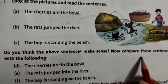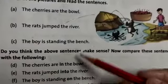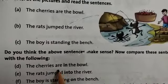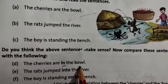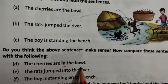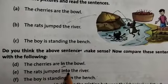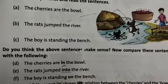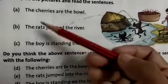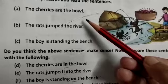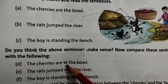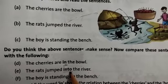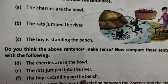Now compare these sentences with the following: The cherries are in the bowl. The rats jump into the river. The boy is standing on the bench. You noticed that 'in,' 'into,' and 'on' are used to complete the sentences.